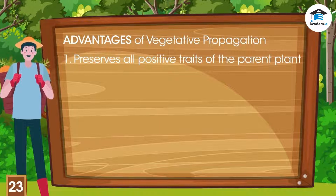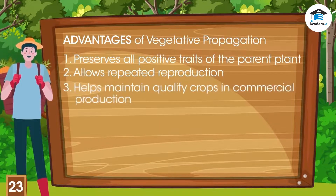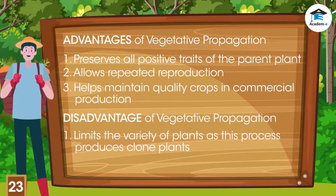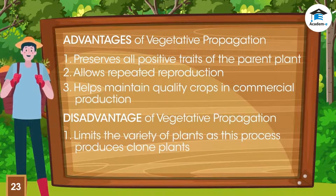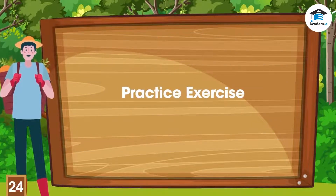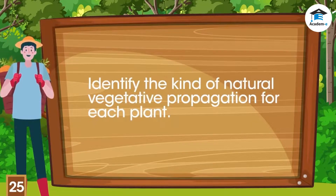Advantages of vegetative propagation: it preserves all positive traits of the parent plant, allows repeated reproduction, and helps maintain quality crops in commercial production. Disadvantage: it limits the variety of plants, as this process produces clone plants.